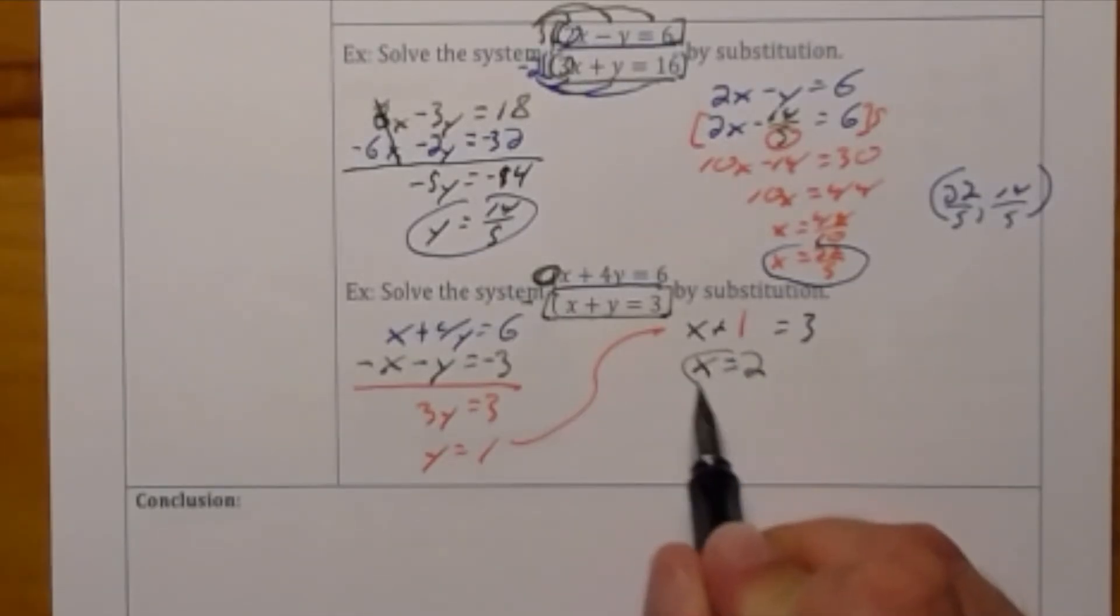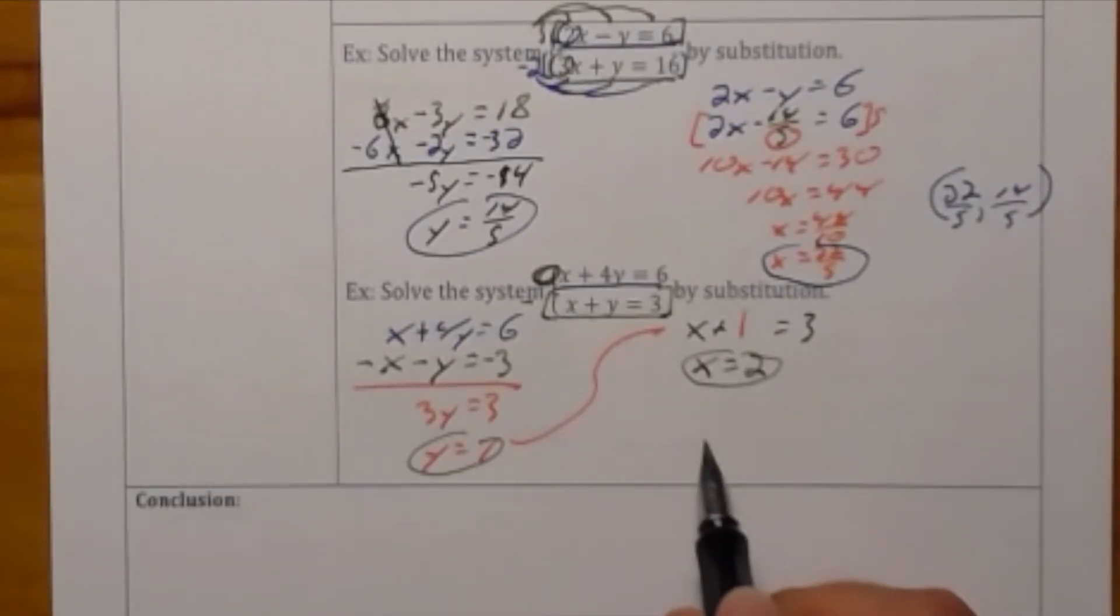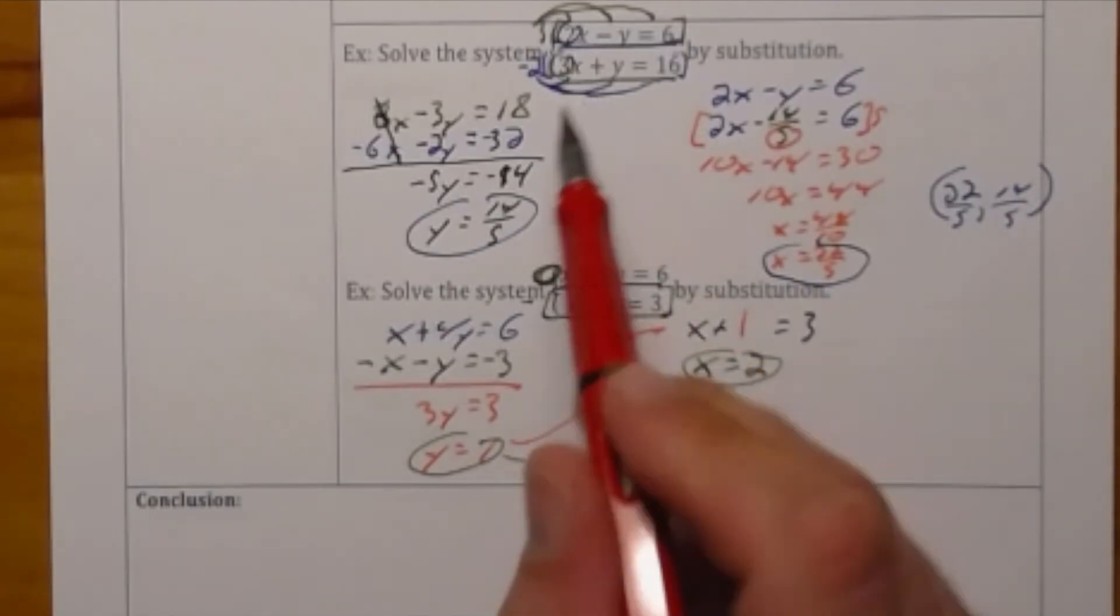Subtracting 1 from both sides I get that x is 2 and now that I know that x is 2 I can put them together as an ordered pair so that I get 2 comma 1.